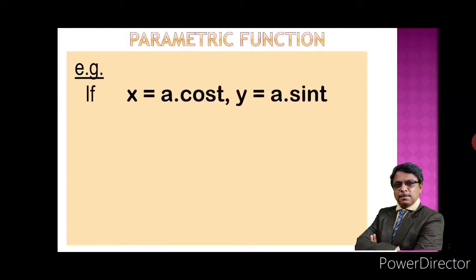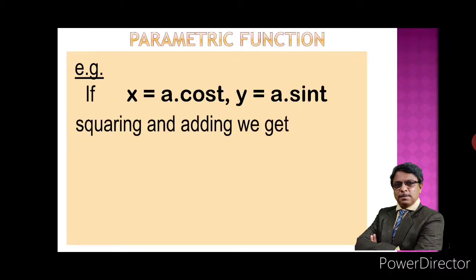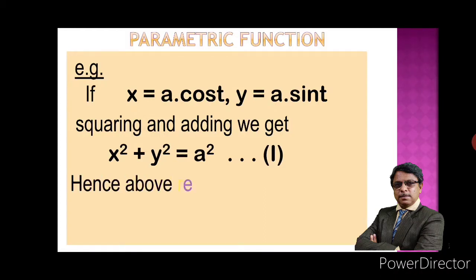Let's see an example of parametric functions. Consider x = a·cos(t) and y = a·sin(t), where a is a constant. Both x and y are functions of another variable t, so t is a parameter and these two relations are called parametric functions. We can square and add these two relations: x² + y² = a²·cos²(t) + a²·sin²(t). Taking a² common, since cos²(t) + sin²(t) = 1, we get x² + y² = a².